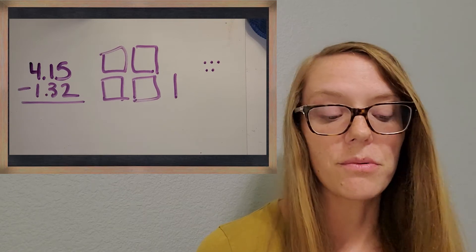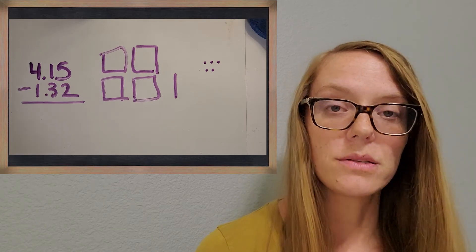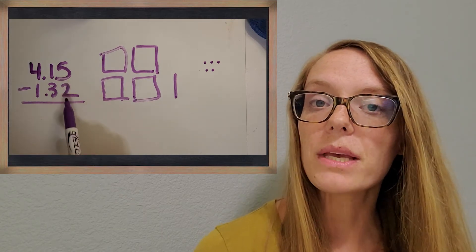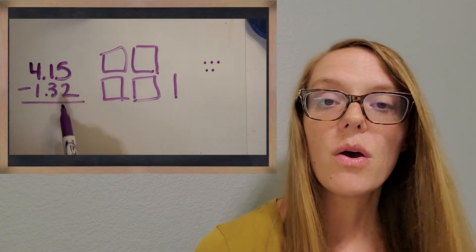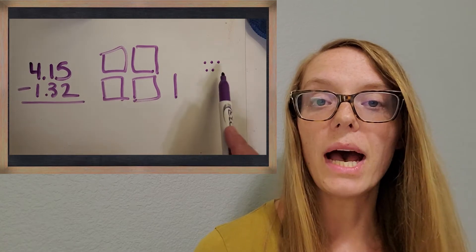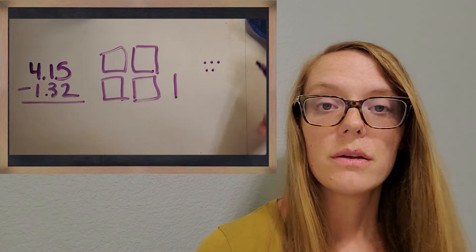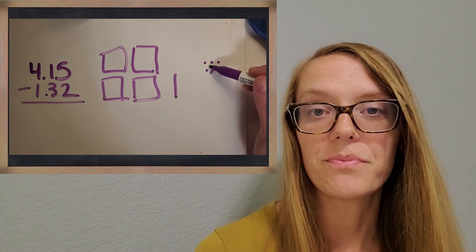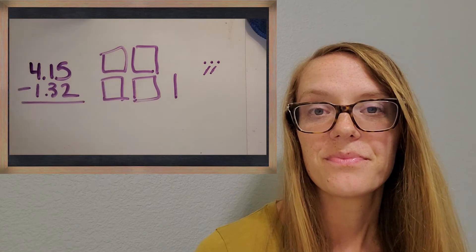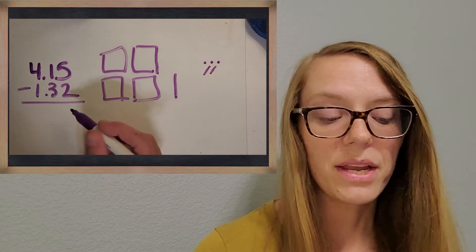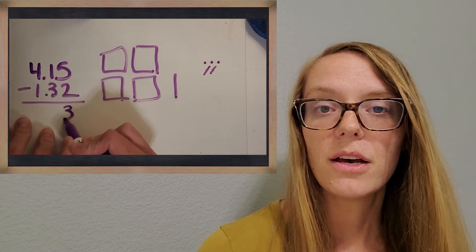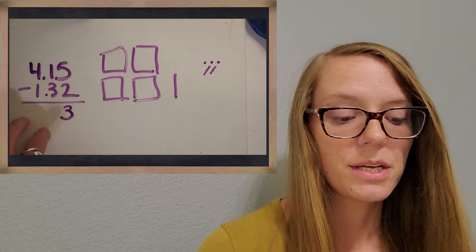Let's start again with that smallest place value. What is 5 take away 2? 5 minus 2. You got 3 hundredths left.